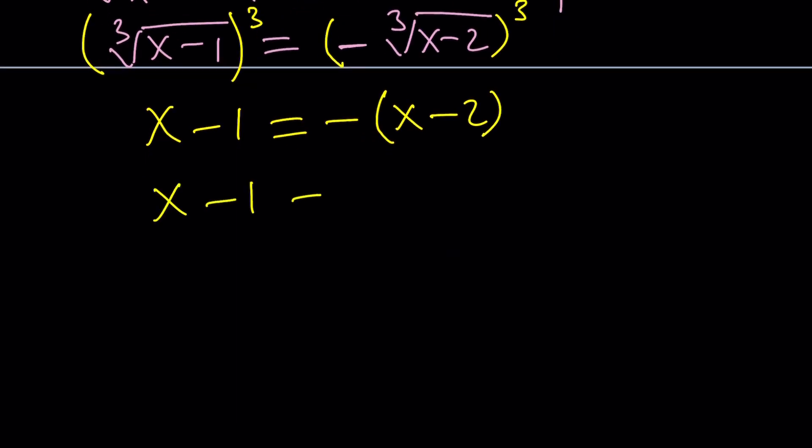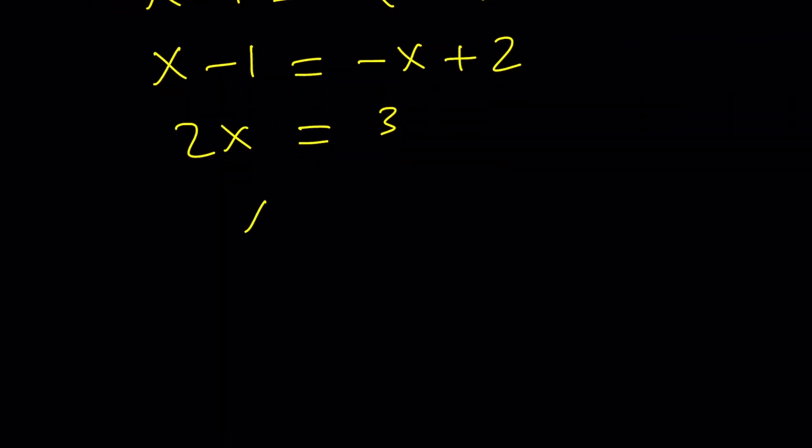So from here we get something nice because this equation has a solution. Now notice that if I got x minus 1 equals x minus 2, which could happen with square roots or fourth roots, even ones, that wouldn't work because there are no solutions. So now put the x's on the same side. 2x equals 2 plus 1, which is 3. From here, x equals 3 halves. Nice.